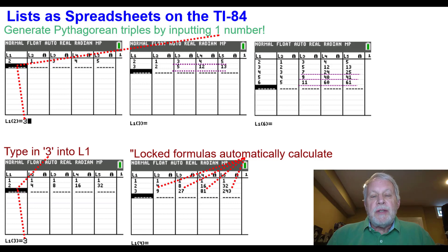Using lists as spreadsheets on the TI-84, we're going to generate Pythagorean triples by inputting just one number.